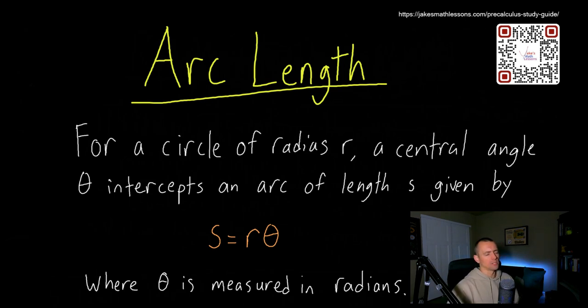So let's jump right into it. Essentially it comes down to a very simple formula. For a circle of radius r, a central angle θ intercepts an arc of length s given by s = rθ, where θ is measured in radians.